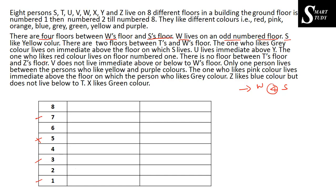The next information is that S likes yellow color. Again we have not placed S anywhere yet, so I'm going to write this and keep it on hold. The next information is that there are two floors between T's floor and W's floor. As we don't know where T or W are, I'm going to keep this information on hold as well.